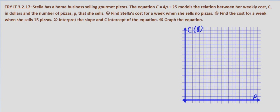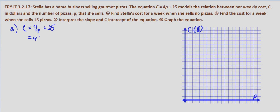With part A we're asked to find Stella's cost for a week when she sells no pizzas. Looking at the equation C equals 4P plus 25, P is the number of pizzas and we're asked to find costs when she sells no pizzas, so that would be when P equals zero. This equals 4 times 0 plus 25, which equals $25. So her cost when she sells no pizzas in a week is $25.